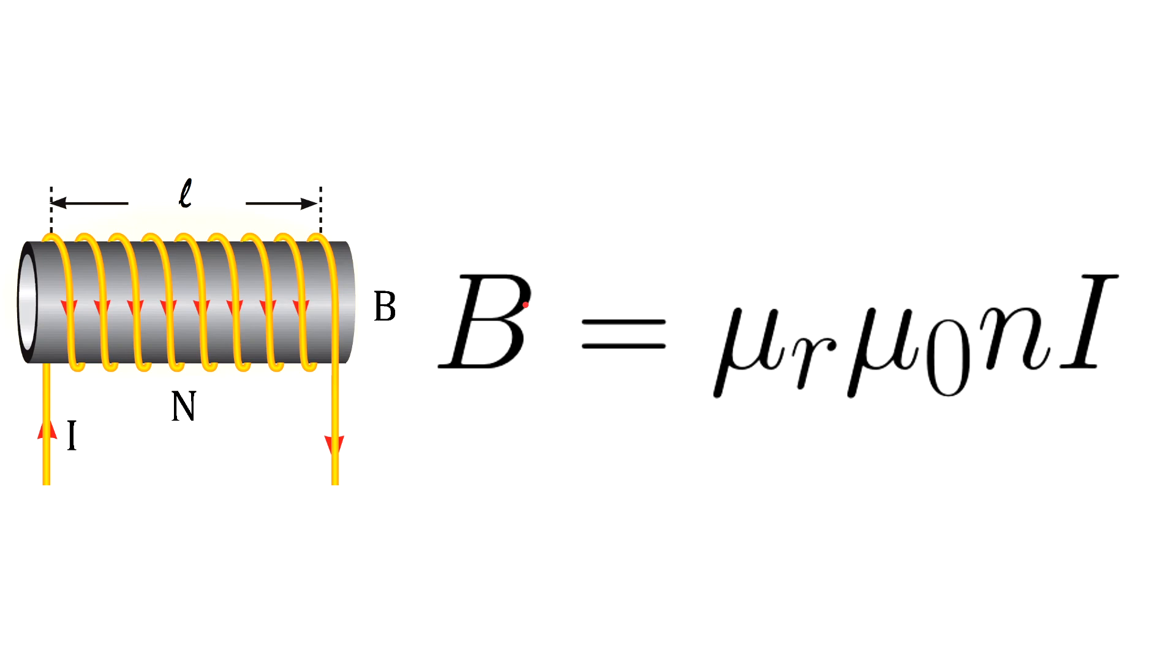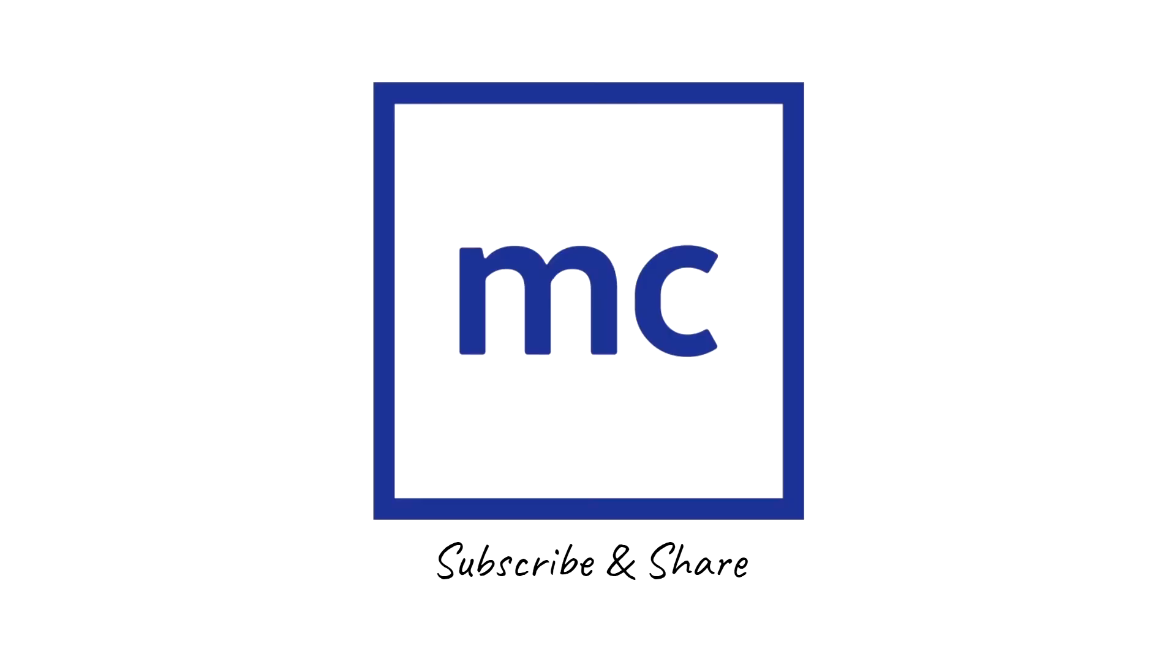The previous equations are valid for a solenoid wound around free space, which means the permeability of the magnetic path is the same as permeability of free space. But this equation is not used as much as the previous ones, so you have my blessings in case you forget this equation. Now this is the end of the lesson. If you like it, subscribe and share.